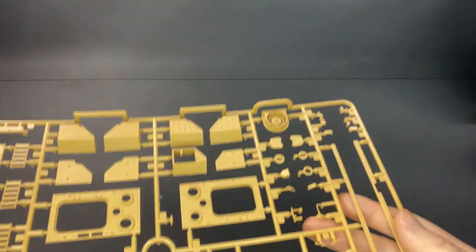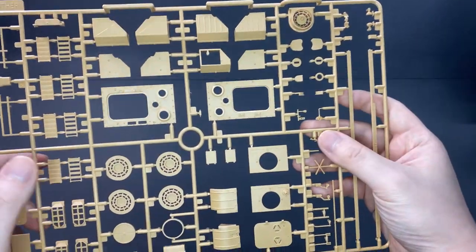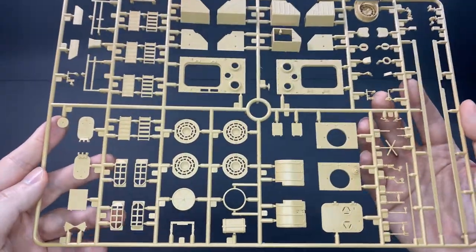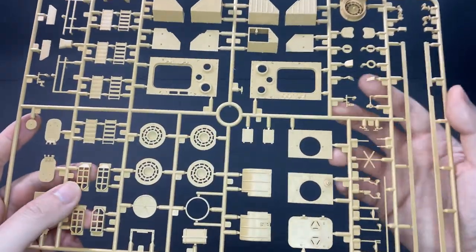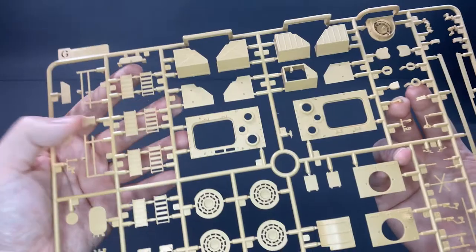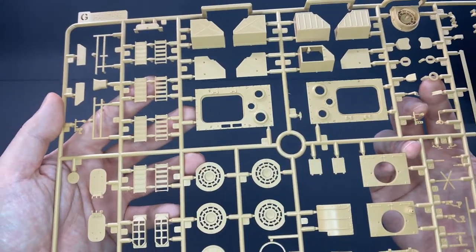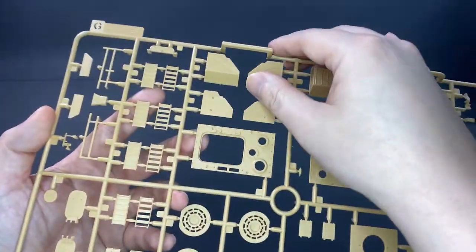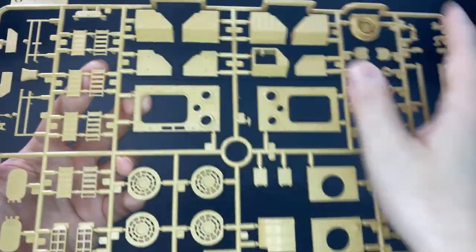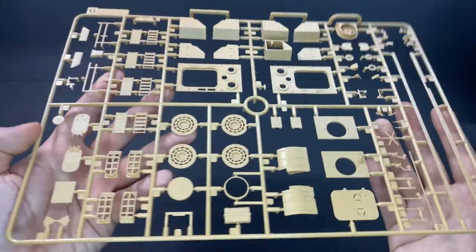Next up is Sprue G, exterior boxes and panels. Okay, maybe some photo etch for this would be nice. They look a little bit too perfect for my liking. There needs to be some metal damage here and there, especially on the side skirts and panels.